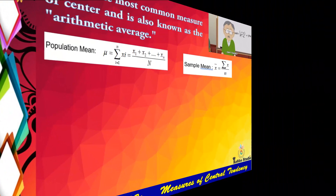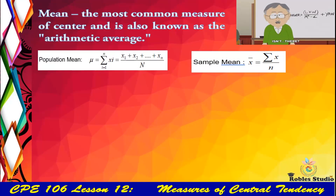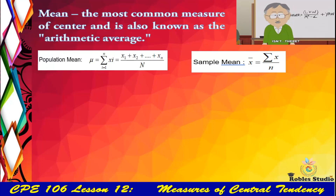Mean is the most common measure of central tendency and is also known as the arithmetic average. I have presented the two formulas for the mean: we have the population mean and the sample mean.